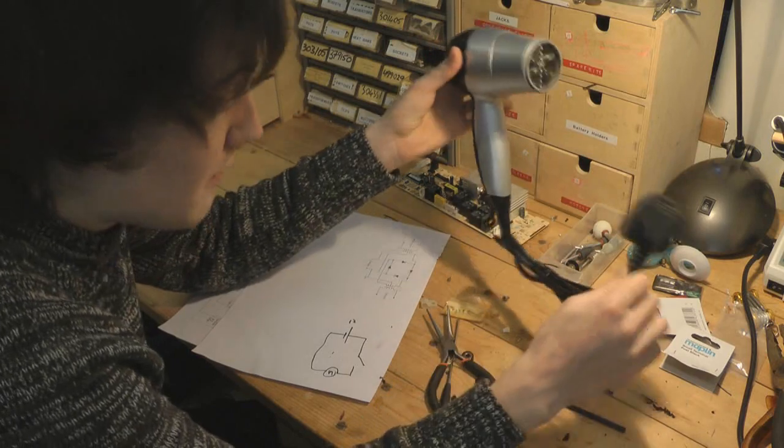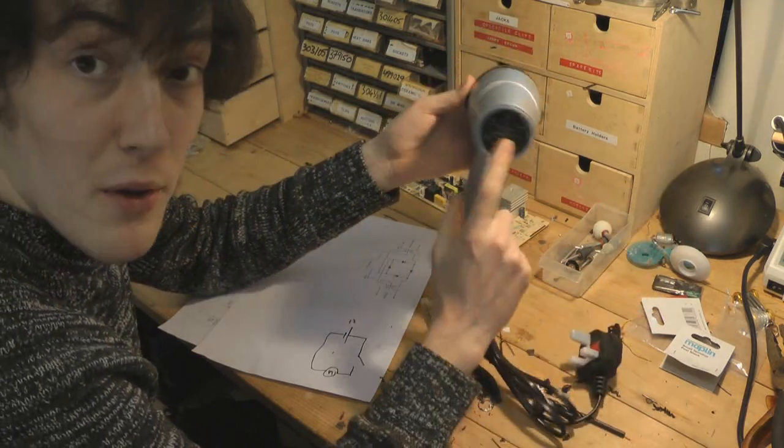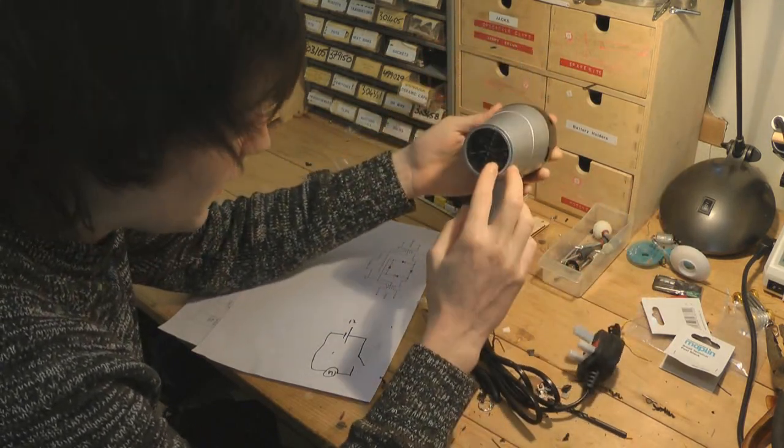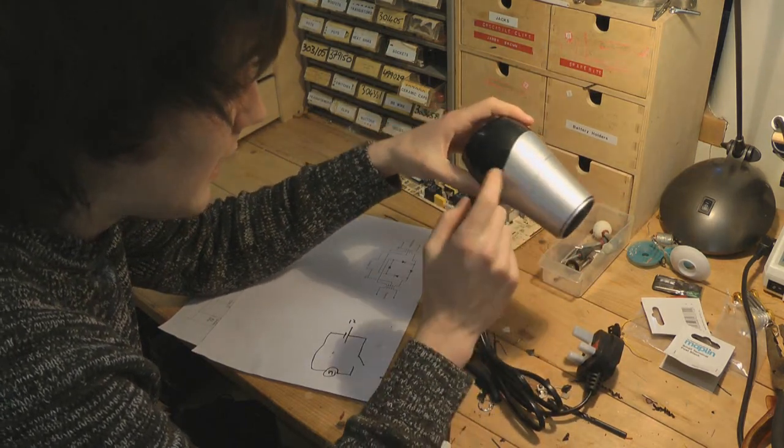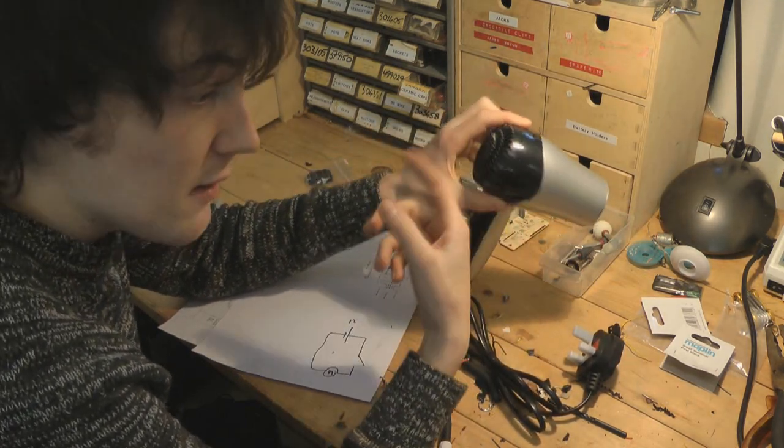Now why are we taking away the mains capability? Well mainly because we don't want this to heat anything, we don't want it to be a hairdryer, we just want it to be a blower. So all we're after really is the 12 volt DC fan that's in there.